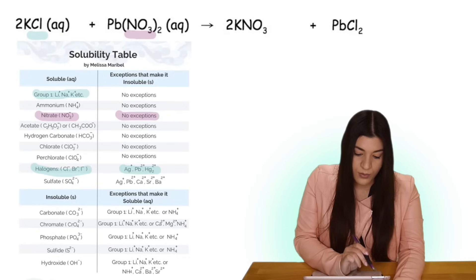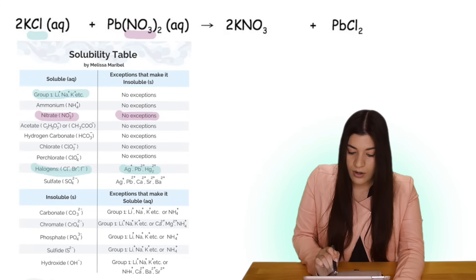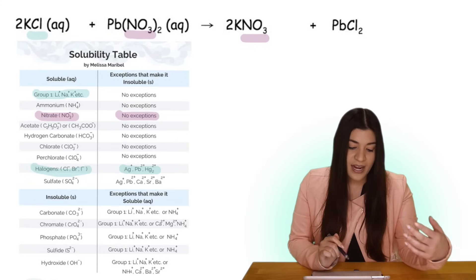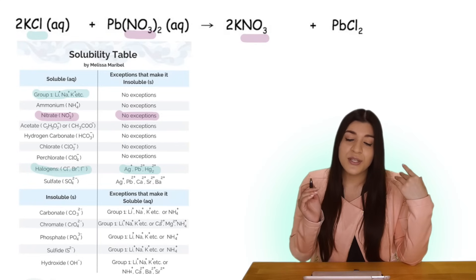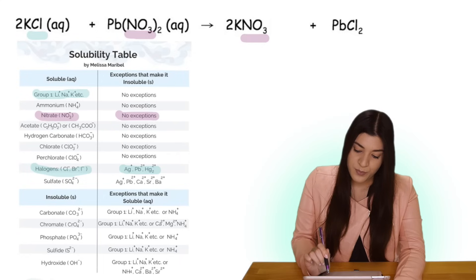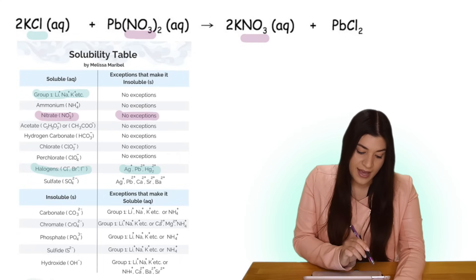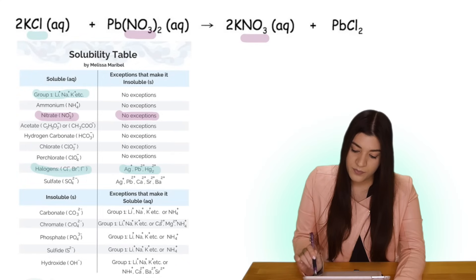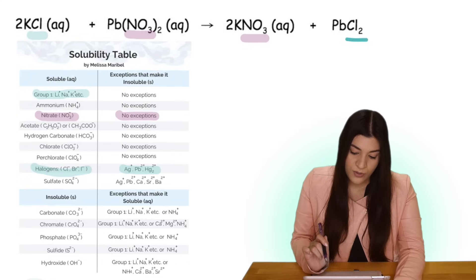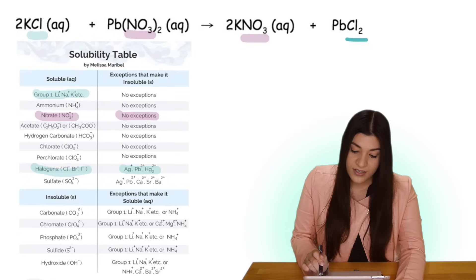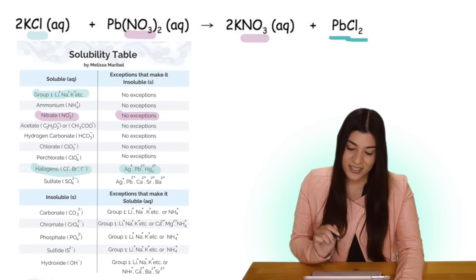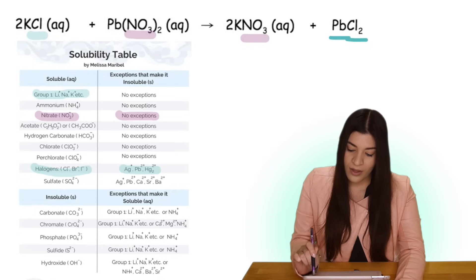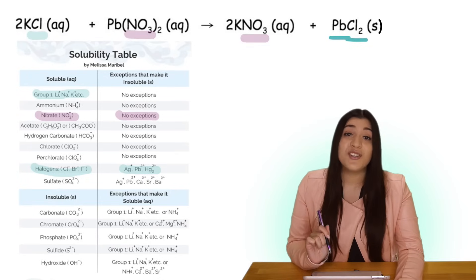Checking the last compound, we have chlorine again, but lead is one of the exceptions to the halogen solubility rule. Since lead is an exception, that means lead chloride must be a solid.